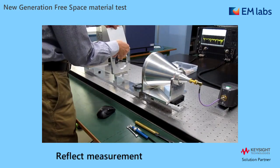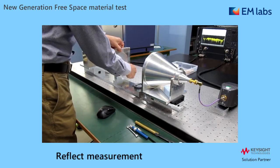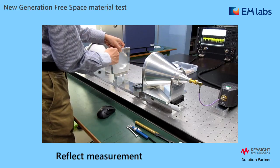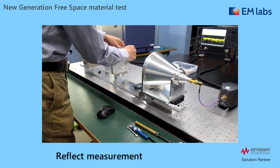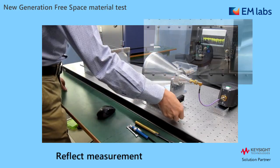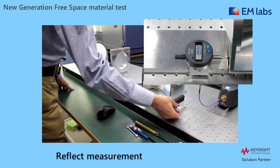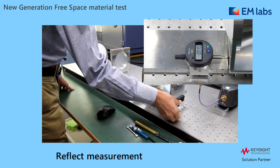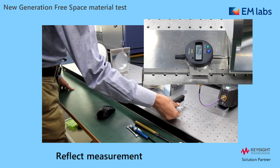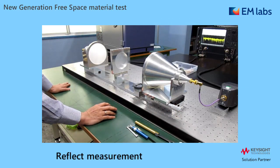Let's see how it looks. Start from reflect: set the metal plate to make full reflection. You need to move the antenna exactly the same distance as the plate thickness — in this case, it is 948 μm. Then trigger the measurement.